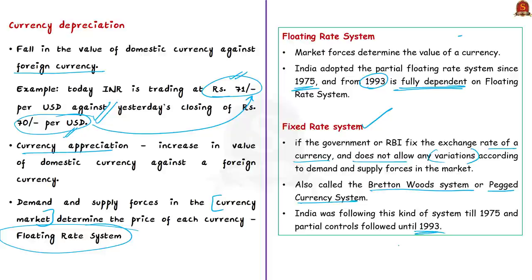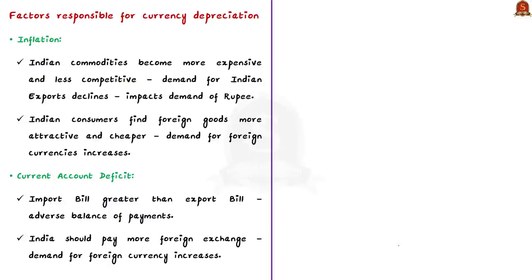The major factor in deciding currency price is the demand and supply for a country's currency in the international forex market. This demand and supply is influenced by many factors like inflation, global trades, interest rates fluctuation, central banks and government intervention, external borrowings, and geopolitical stability. Apart from these, the level of confidence in the economy of a particular country also influences that country's currency.